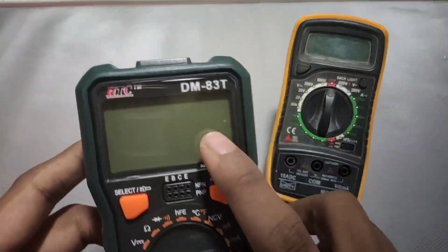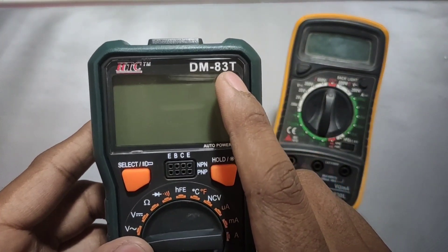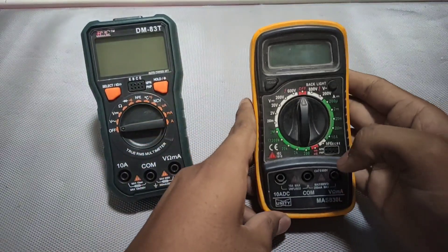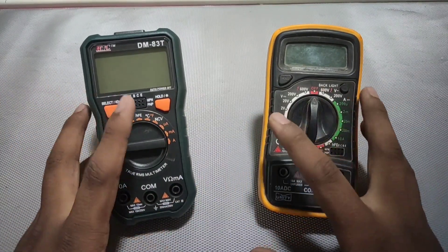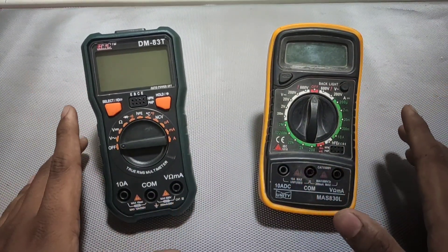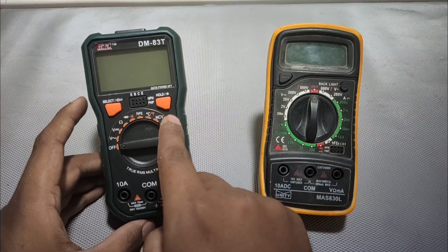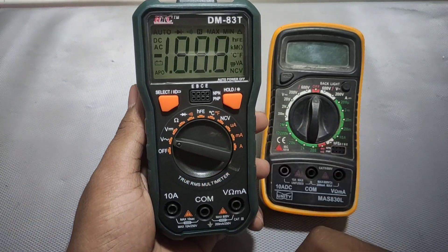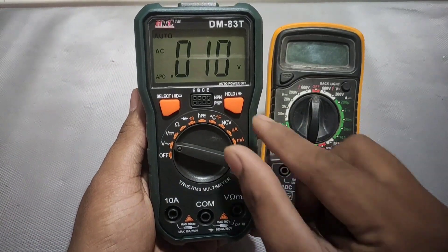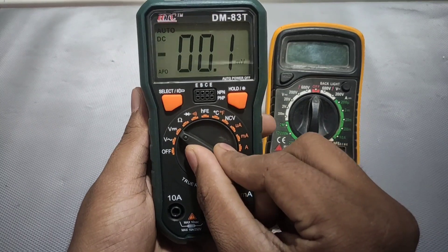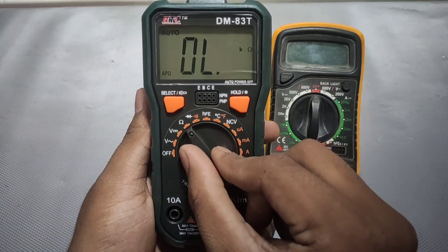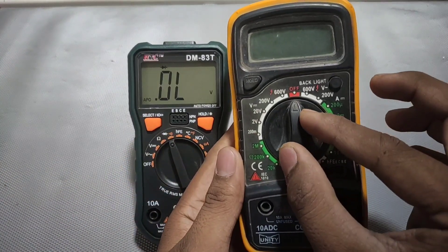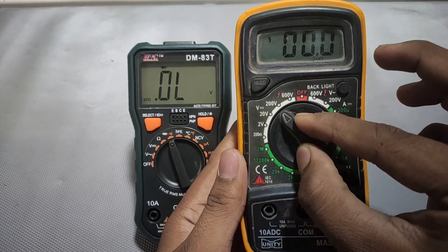So now let's compare HTC DM-83T with Unity Mass 830L. First of all you will see here the difference between the clicking noise of rotary switch. So this looks awesome and this doesn't.